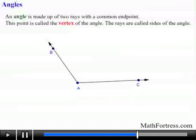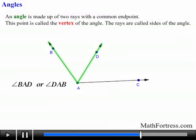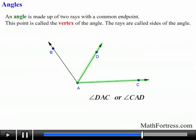If we take the same angle and draw another ray from point A to point D, we would end up with three new angles. Make sure you can see them. The first angle is formed by points BAD and is denoted as angle BAD or angle DAB. The second angle is denoted as angle DAC or angle CAD.